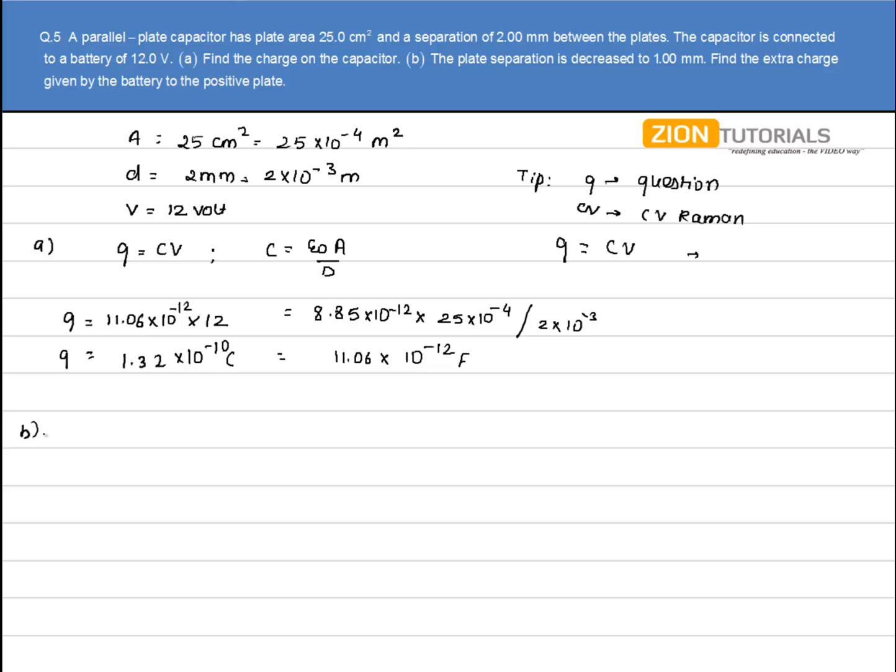In part (b), the plate separation is decreased to 1 mm, so d = 1 mm = 1×10⁻³ meter.